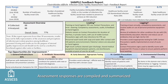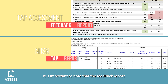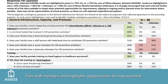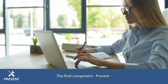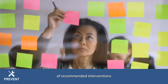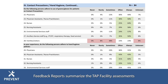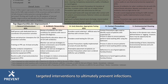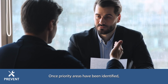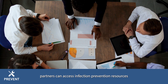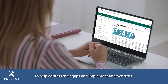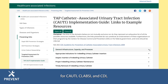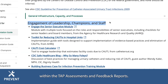Assessment responses are compiled and summarized within a TAP Feedback Report. It is important to note that the Feedback Report is distinct from NHSN TAP Reports. The TAP Feedback Report aggregates the anonymous responses from staff members and highlights opportunities for improvement. The final component, Prevent, guides partners in strengthening the implementation of recommended interventions to address identified gaps in infection prevention. Feedback Reports are used to identify and prioritize gaps, helping facilities to develop and implement targeted interventions to ultimately prevent infection. Partners can access infection prevention resources within the TAP implementation guides for CAUTI, CLABSI, and CDI, which align with the infection prevention domains within the TAP assessments and feedback reports.